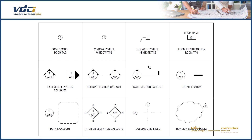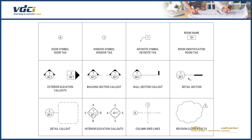Sometimes we will have details, which would be blow-ups of certain things. Where I have this thicker line, that would indicate the detail section is cut through here. To see that particular detail, go look at image 1 on page A5.1 to see the detail that's cut through here.